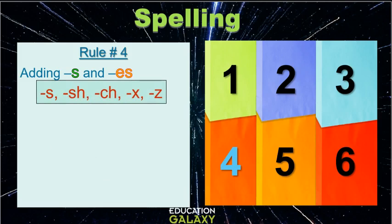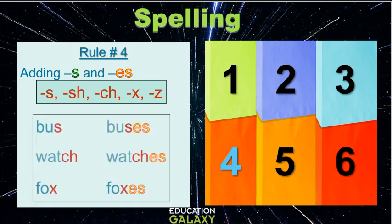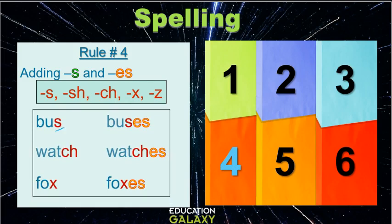Now the rule says that if a word ends in S, SH, CH, X, or Z, we add ES at the end. For example, bus to buses. We add ES at the end to make the plural. Watch ends in CH. We add an ES here to make the plural. Similarly, fox to foxes.